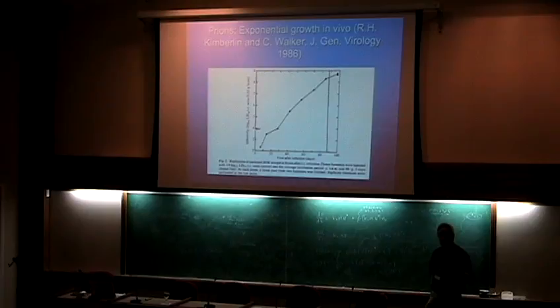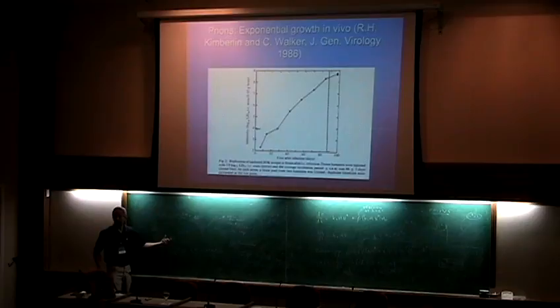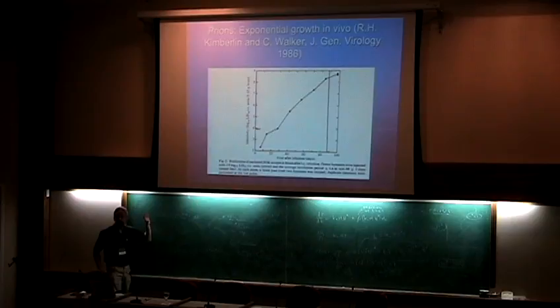At short times you get this T-squared behavior, but you also get exponential growth at longer times. This heterogeneous nucleation is another way of describing auto-catalysis: you take normal stuff, catalyze the formation of infectious stuff, it drops away, and you repeat. Whenever you have auto-catalysis, you get exponential growth. One of the questions in the prion game is whether the exponential growth observed is due to this kind of heterogeneous auto-catalysis or whether it's due to fission.